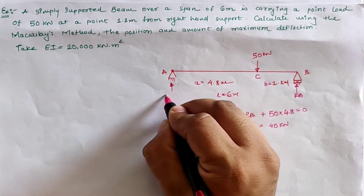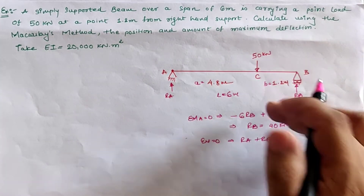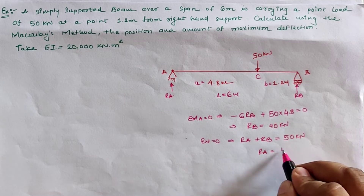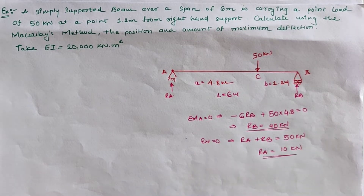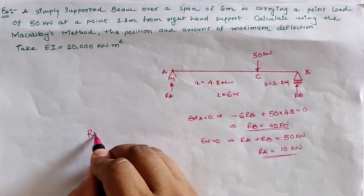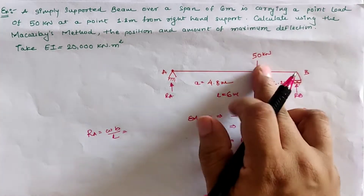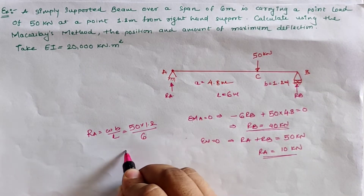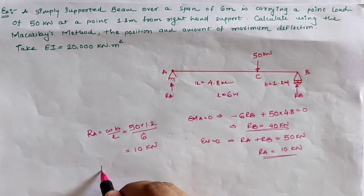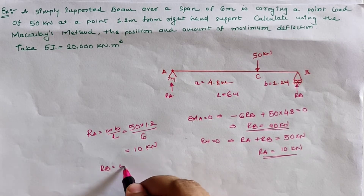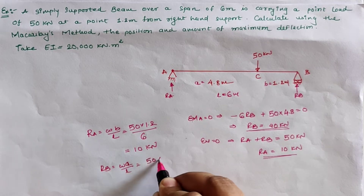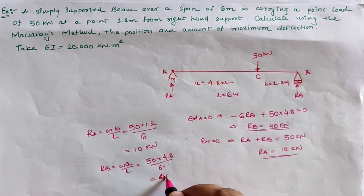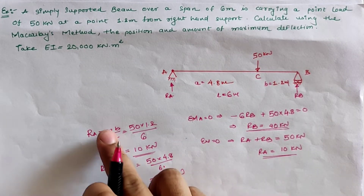Taking sigma V equal to zero: R_A plus R_B minus 50 kilo Newton equals zero. With R_B equal to 40 kilo Newton, R_A equals 10 kilo Newton. We can also calculate directly: R_A equals W·b/L = 50 × 1.2 / 6 = 10 kilo Newton, and R_B equals W·a/L = 50 × 4.8 / 6 = 40 kilo Newton. These are the support reactions using the three equilibrium conditions.